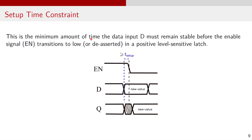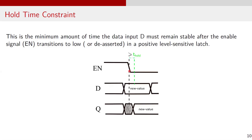First, the setup time constraint. Setup time is the minimum amount of time the data input D must be stable before the enable signal EN transitions to low, or gets de-asserted. If this condition is violated, the data may not propagate correctly to output Q. The setup time requirement is shown in the waveform — the data input D must be stable at least for T_setup time before the enable signal is de-asserted.